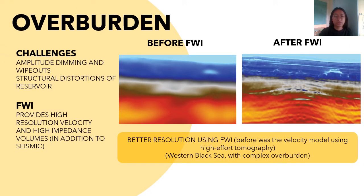For overburden geological settings, amplitude dimming, wipeouts, and distortions of structure are common challenges. FWI is able to help with these challenges by providing high-resolution velocity and high-impedance volume. The example here is from the Western Black Sea area with a complex overburden. The figure before FWI uses high-effort tomography, where the resolution is not very clear. After FWI was applied, the image has better resolution, and small details of the structure can be imaged as well.